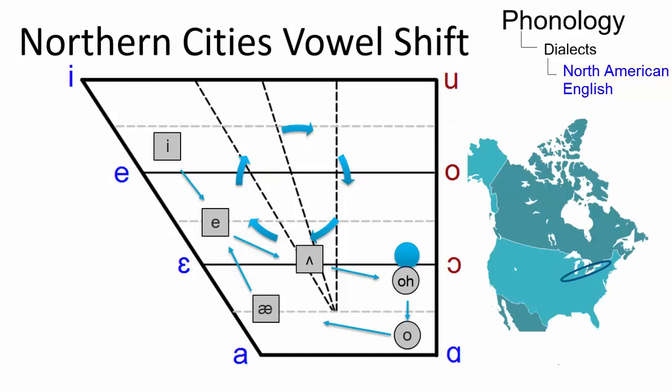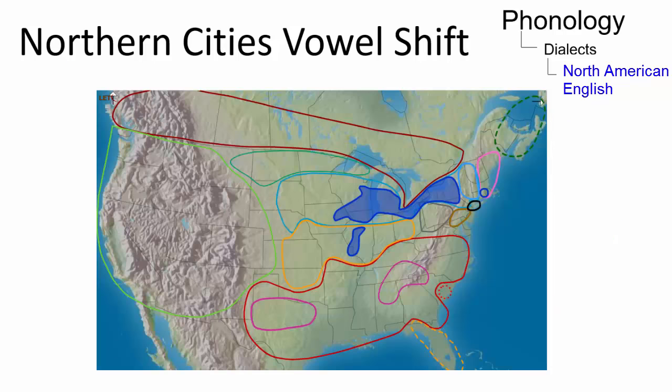The Northern Cities vowel shift is a major sound shift that involves the movement of six vowels. This shift is currently in progress in the region near the Great Lakes.